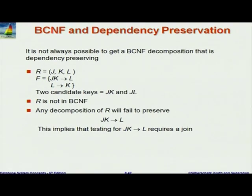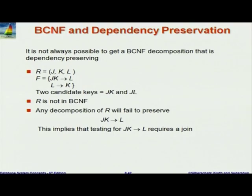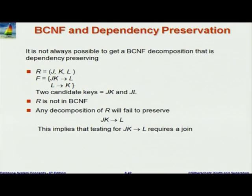Now, the last point here is that it's not always possible to get a dependency-preserving BCNF decomposition. Here is an example — a fake example, but the book has a more realistic one. If I have JKL as a relation with two dependencies, JK goes to L and L goes to K, then it's not in BCNF. Why? L goes to K — L is not a super key. If you decompose it, what will happen? You will get LK and LJ. That's the only decomposition possible here. JK goes to L does not violate BCNF, so that is not useful for decomposing. This is the only option you have.